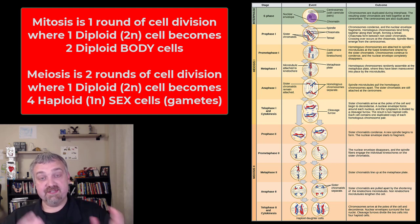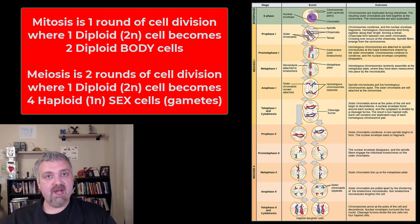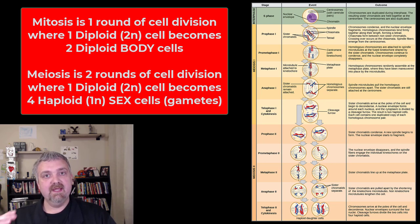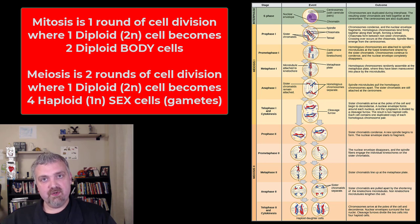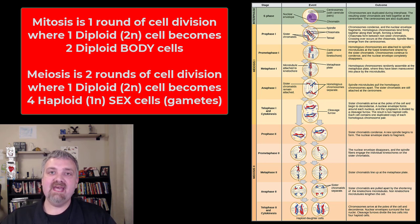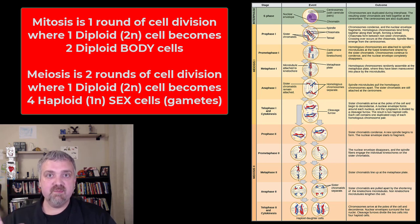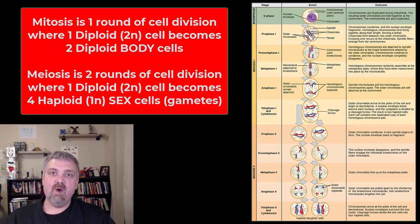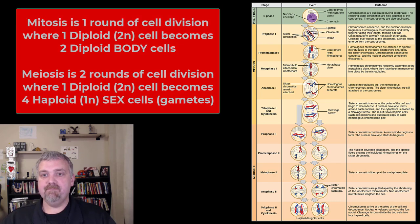So in the end, the two cells are the same as the one they came from. With meiosis, you're going to see two rounds of division — notice meiosis one and meiosis two here — where one cell becomes four. But each of those four new cells are haploid; they're only carrying one set or 23 chromosomes. So meiosis is used to produce your sex cells or your gametes — the spermatozoa or sperm, or the oocyte egg.